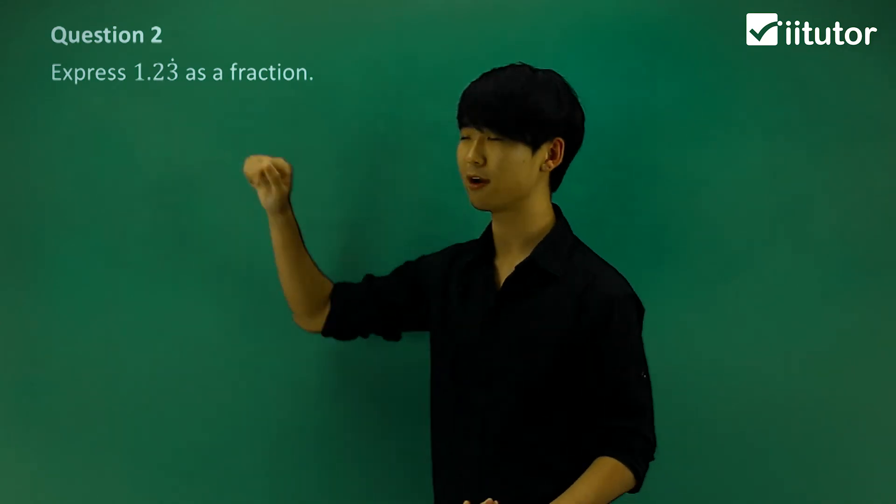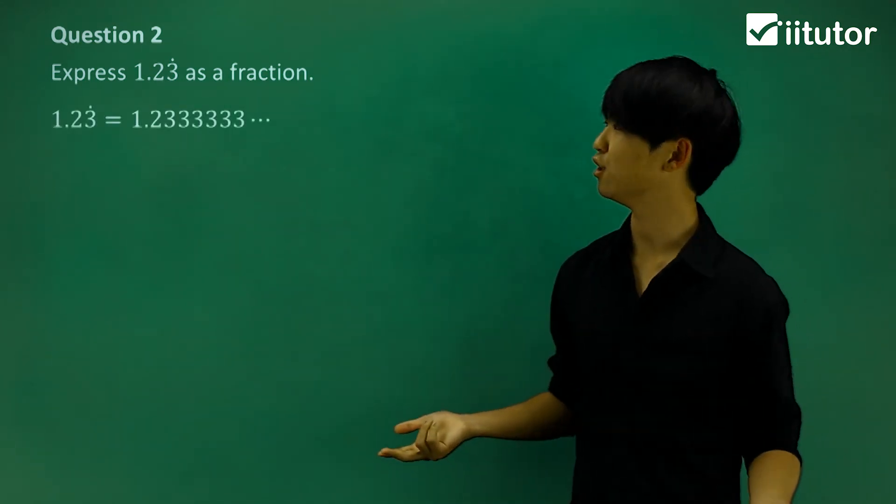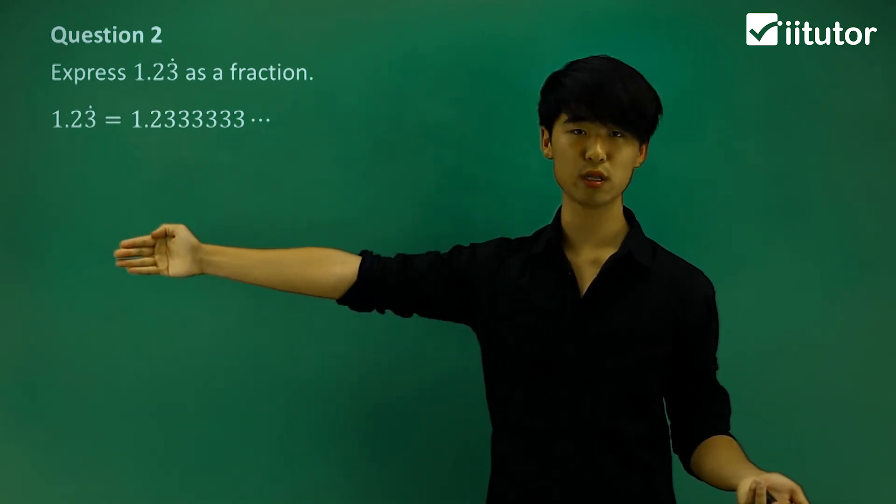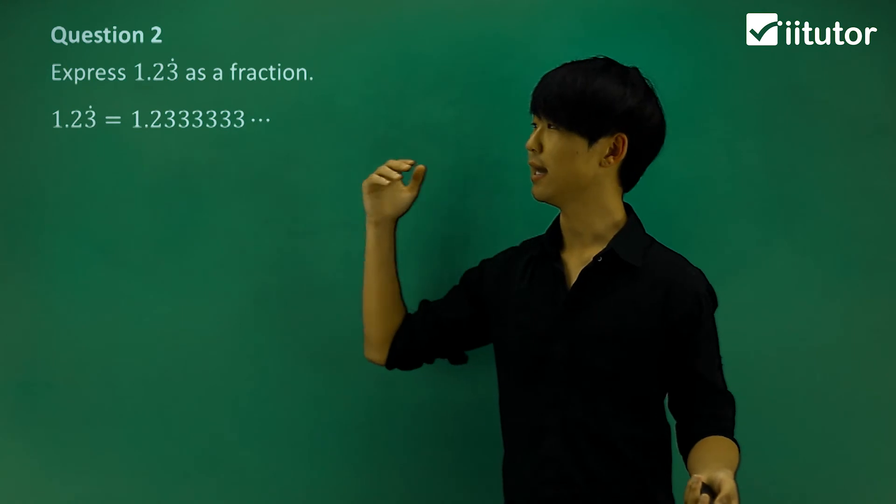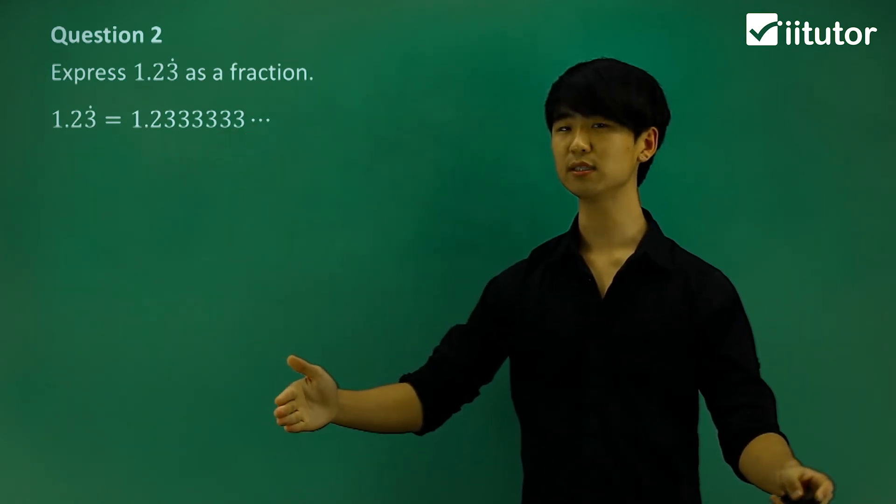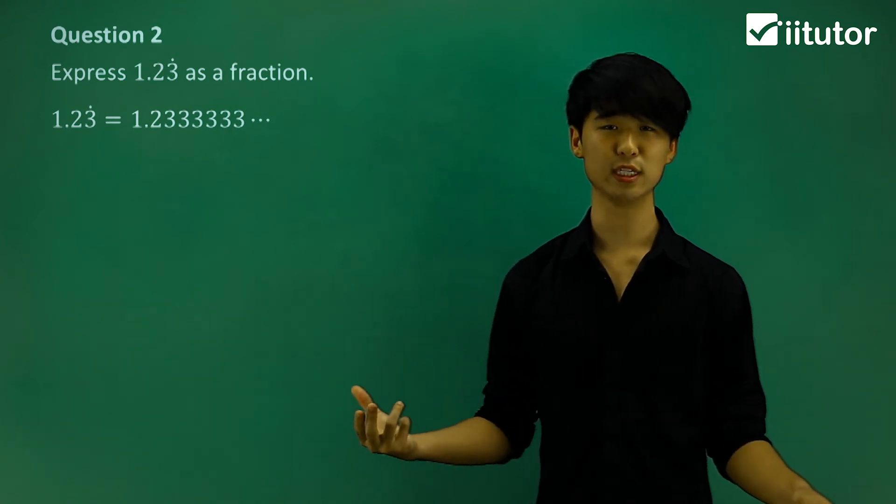So first thing I should do is try and write this without the notation of my recurring. So 1.2333 repeating. Only the 3 is recurring. And again, I want to try and split this up so I can get a geometric series, correct? Now, how am I going to split it up so I get a geometric series?